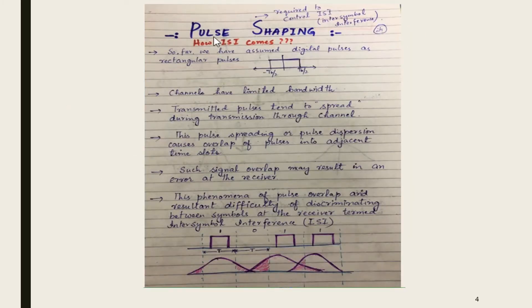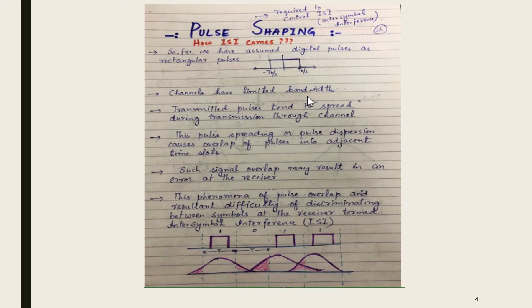Starting with pulse shaping — it is basically required to control inter-symbol interference, also known as ISI. The question is: what is ISI and how does ISI occur? We assume digital pulses are rectangular pulses. We also know that channels have limited bandwidth; transmission mediums are not band-unlimited and have some finite bandwidth.